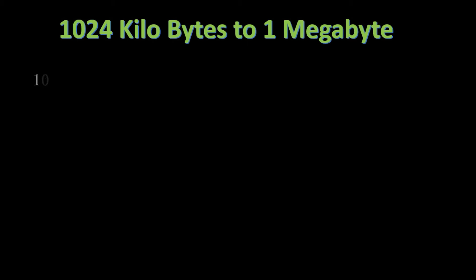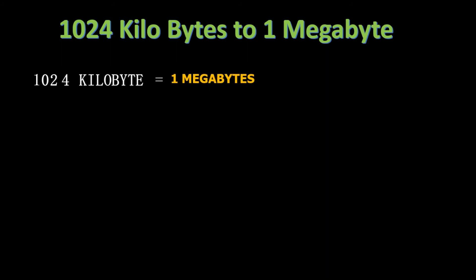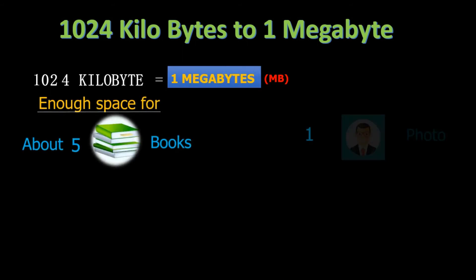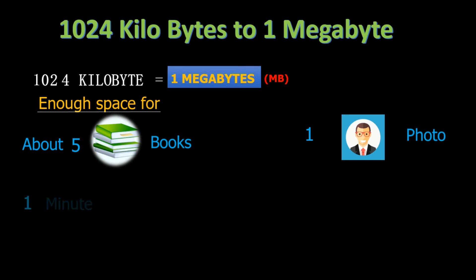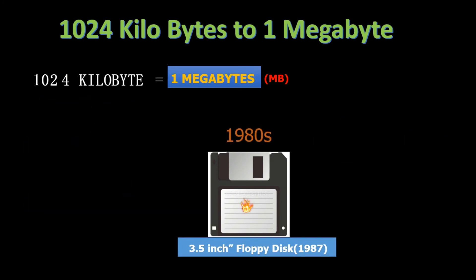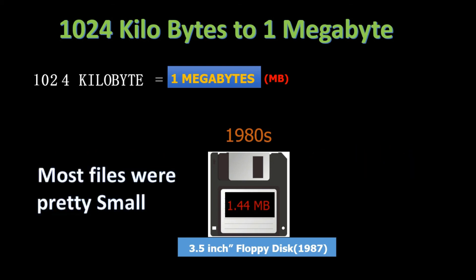So what if you have 1,024 kilobytes? It is called 1 megabyte, often abbreviated as MB. 1 megabyte is enough space to hold about 5 large books, or 1 photo, or 1 minute of music. The 3½-inch floppy disk from the 1980s held 1.44 megabytes of data, which was pretty good at that time because most files were pretty small.